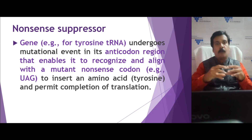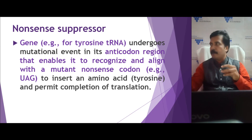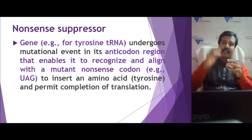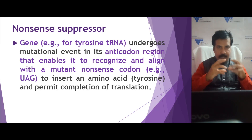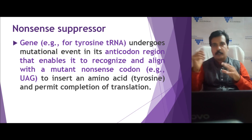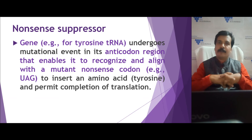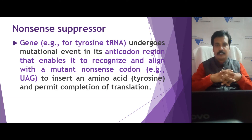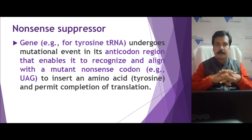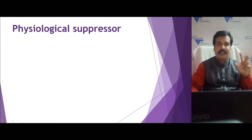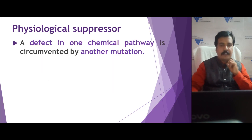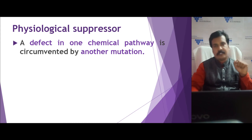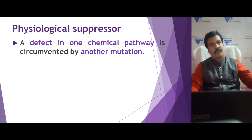The attachment of tyrosine to the tRNA depends upon the anticodon region present at the bottom. This anticodon enables recognition of that particular amino acid and attachment to the tRNA. If this anticodon — which normally attaches tyrosine — gets mutated, but the mutated form still codes for a different triplet codon that enables the same tyrosine attachment, for example UAG still inserts tyrosine, it does not affect the translation process. This is called a nonsense suppressor.